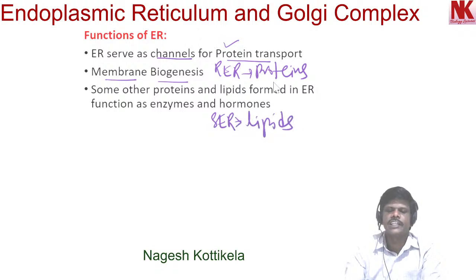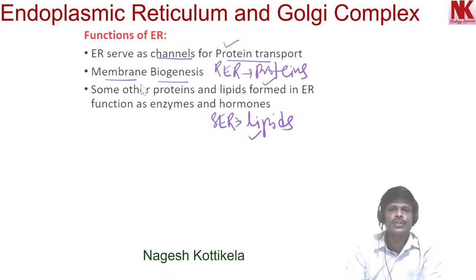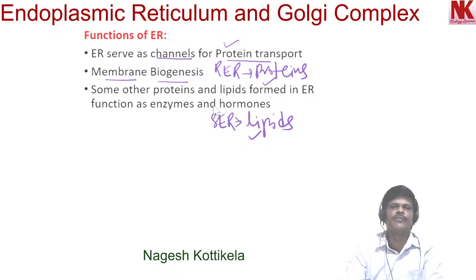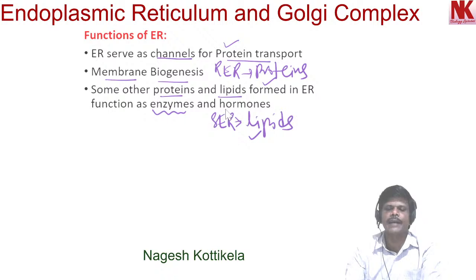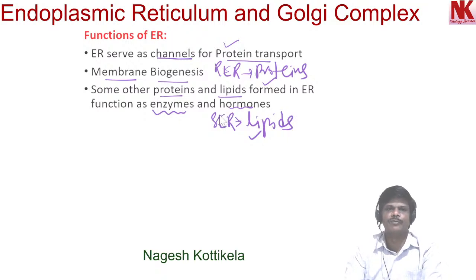The proteins and lipids synthesized by the two types of endoplasmic reticulum are useful for the formation of membranes. Cell membrane is made up of proteins and lipids, so these proteins and lipids are useful for the formation of the cell membrane — this process is called membrane biogenesis. Some other proteins and lipids formed in ER function as enzymes and hormones. Smooth endoplasmic reticulum synthesizes steroid hormones.